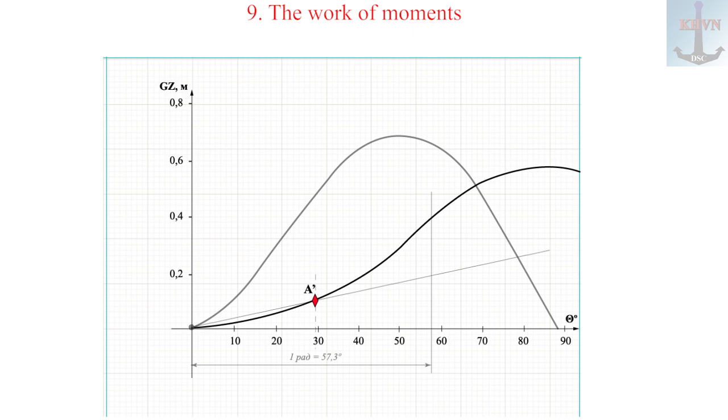Two: from the origin of coordinates through this point, an inclined straight line is drawn. Three: on a segment of one radian, the value of the healing moment is found.